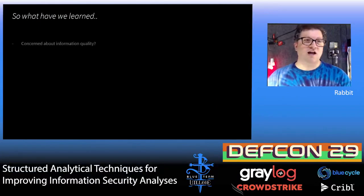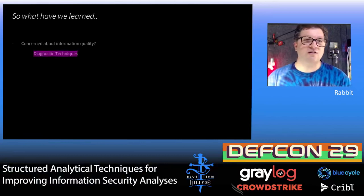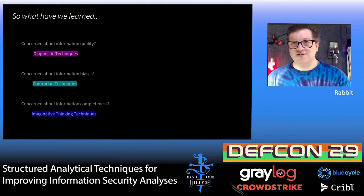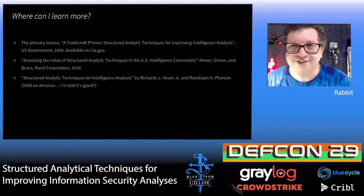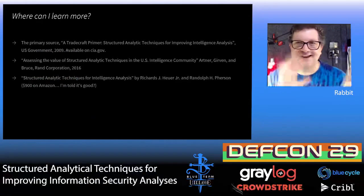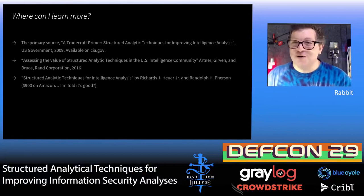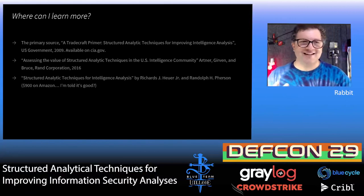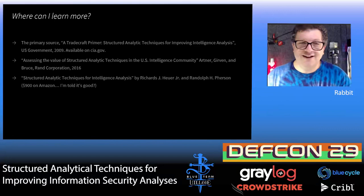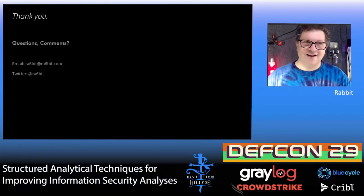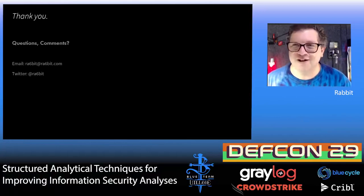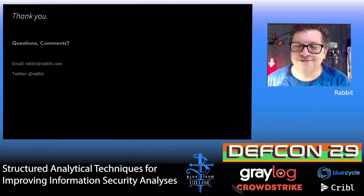So what have we learned? If you're concerned about information quality, use diagnostic techniques. If you're concerned about information biases, use contrarian techniques. If you're concerned about information completeness, use imaginative thinking techniques. Where can you learn more? The CIA Tradecraft Primer document I started with is fantastic and goes way more into depth — you should really read it. There's also a great document from the RAND Corporation where they analyze the first document and decide whether they think it's good. And there's a book, Structured Analytic Techniques for Intelligence Analysis by Richard Heuer and Randolph Pearson — it's $900 on Amazon so I didn't read it, but I hear it's really good. If you have any questions, I'm Rabbit, pretty easy to find on Twitter, and you can email rabbit at rabbit.com. Thank you for listening.